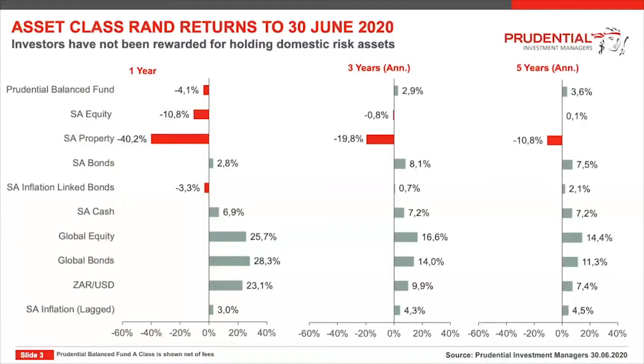Thanks, Michael. As you highlight, the largest exposure in the portfolio, SA equity, has delivered poor absolute returns over five years. But what did certainly contribute to the bigger drawdown relative to the peer group was a period of poor stock picking, some of which we will discuss. There were specific holdings within the portfolio that have detracted.